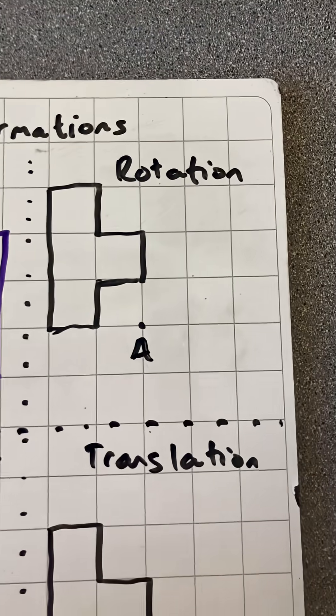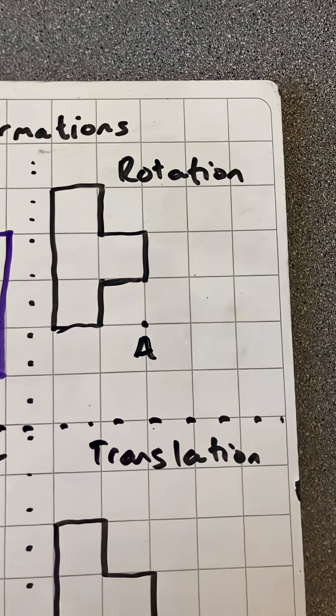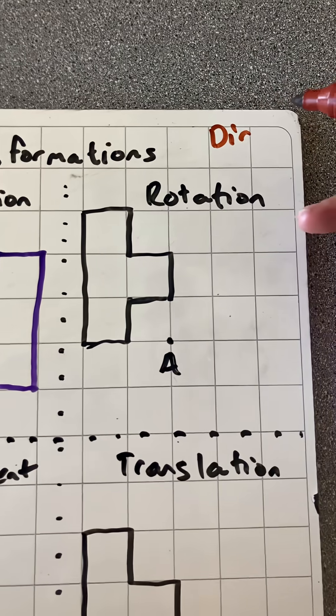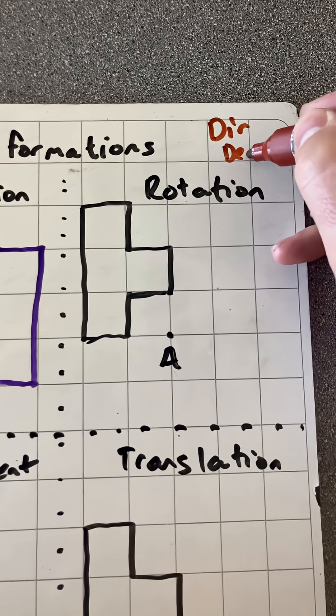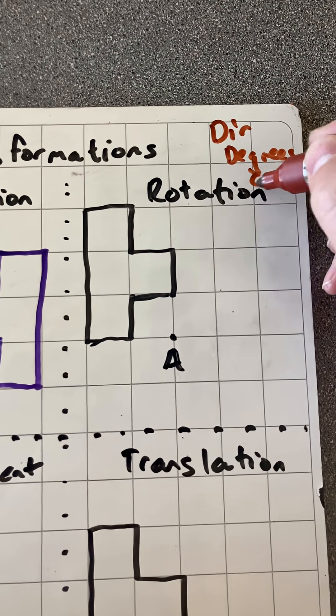If I go to rotation, I then need to know three things. I need to know the direction, I need to know the degrees, and I need to know the center.